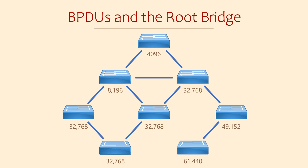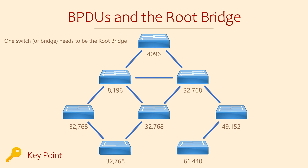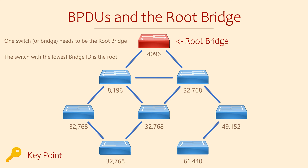As the name suggests, Spanning Tree uses a tree-like structure, with the main links branching out to other switches. One of the switches in the topology will become the root bridge — this is the most important place in the topology, and it is decided based on the Bridge ID. The switch with the lowest Bridge ID becomes the root bridge. We can influence this by changing the bridge priority, since we can't change the switch's MAC address. If two switches have the same priority, the lowest MAC address breaks the tie.